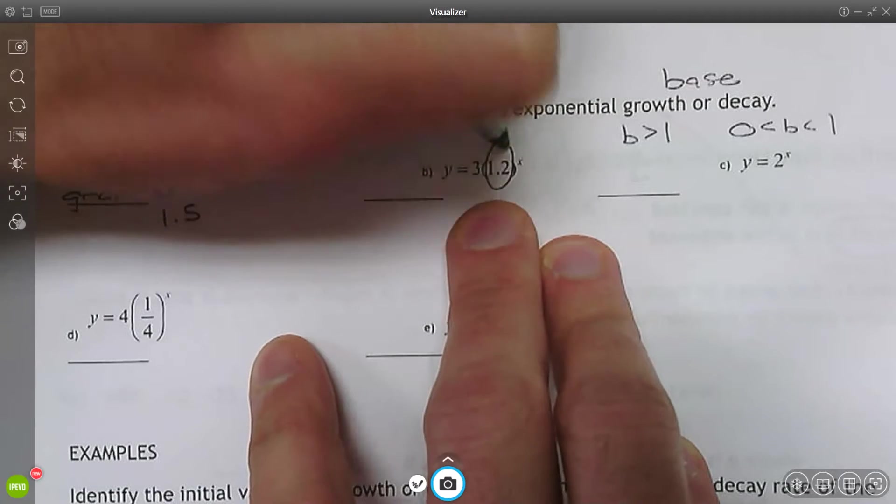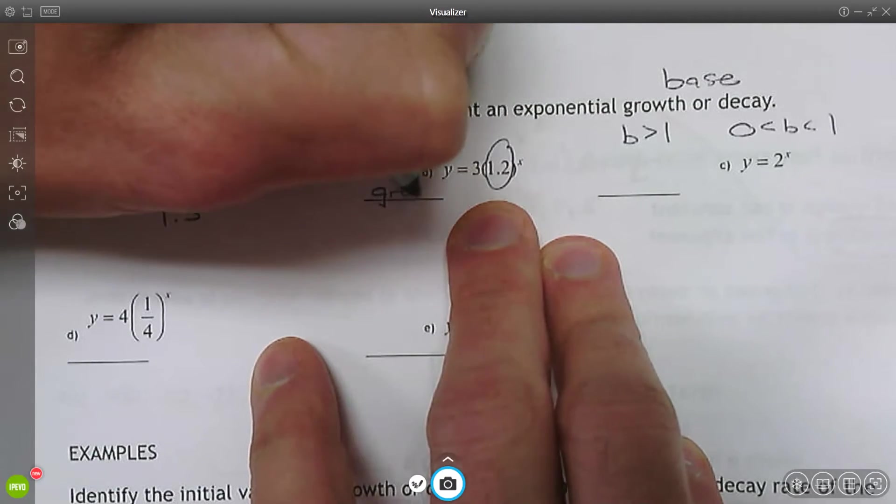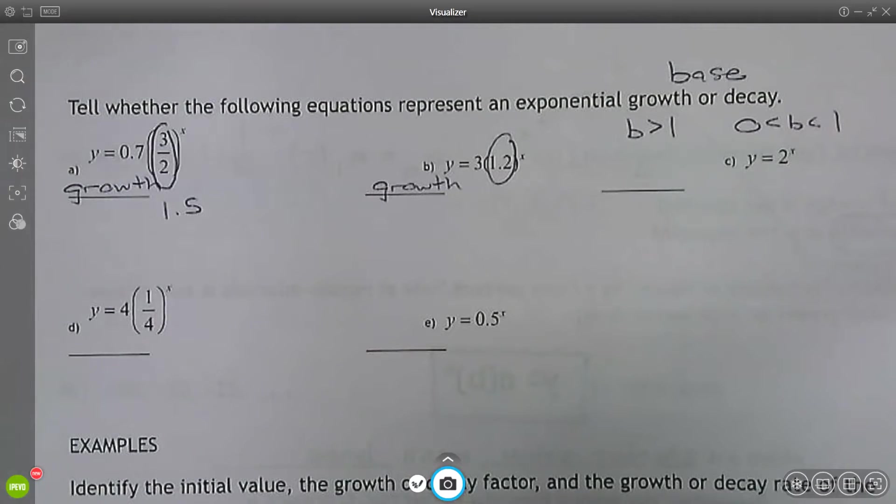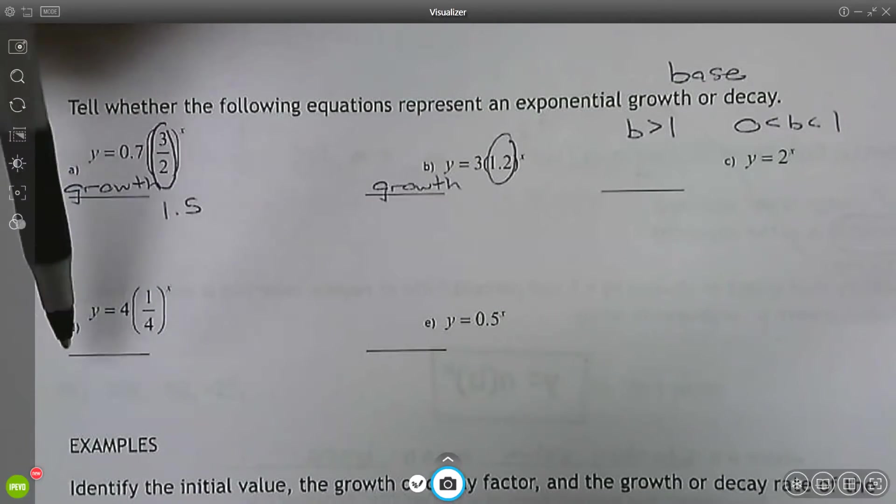B, the base is 1.2. This is larger than one. This is exponential growth. What I'd encourage you to do right now, pause the video and see if you can answer C, D, and E.